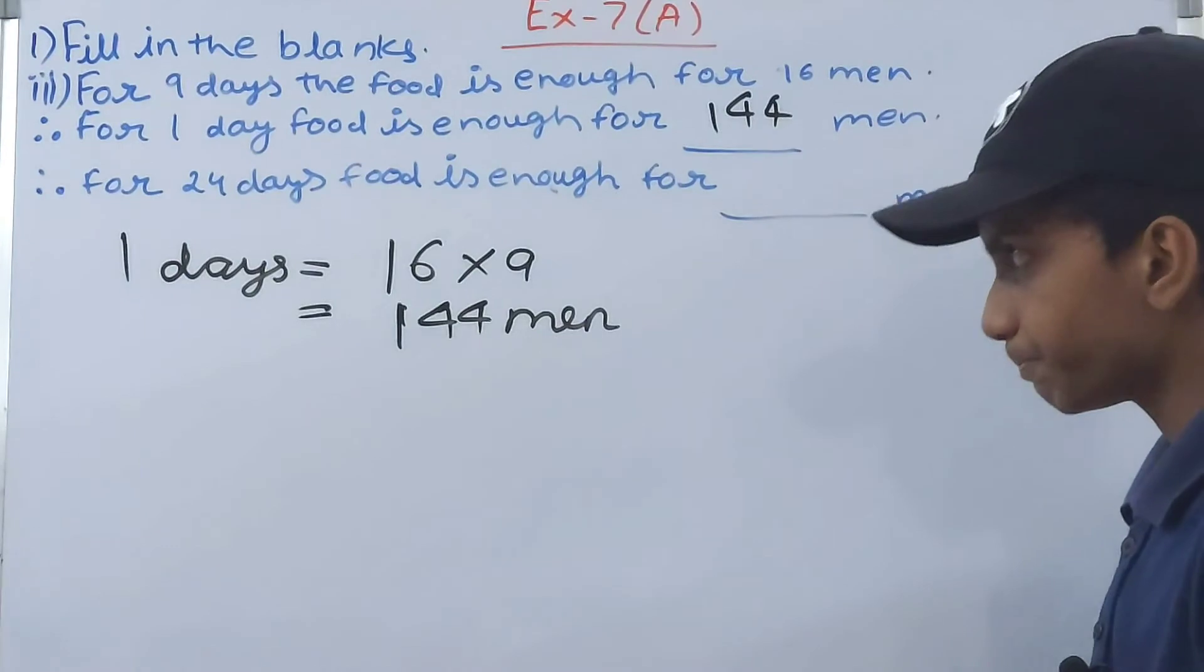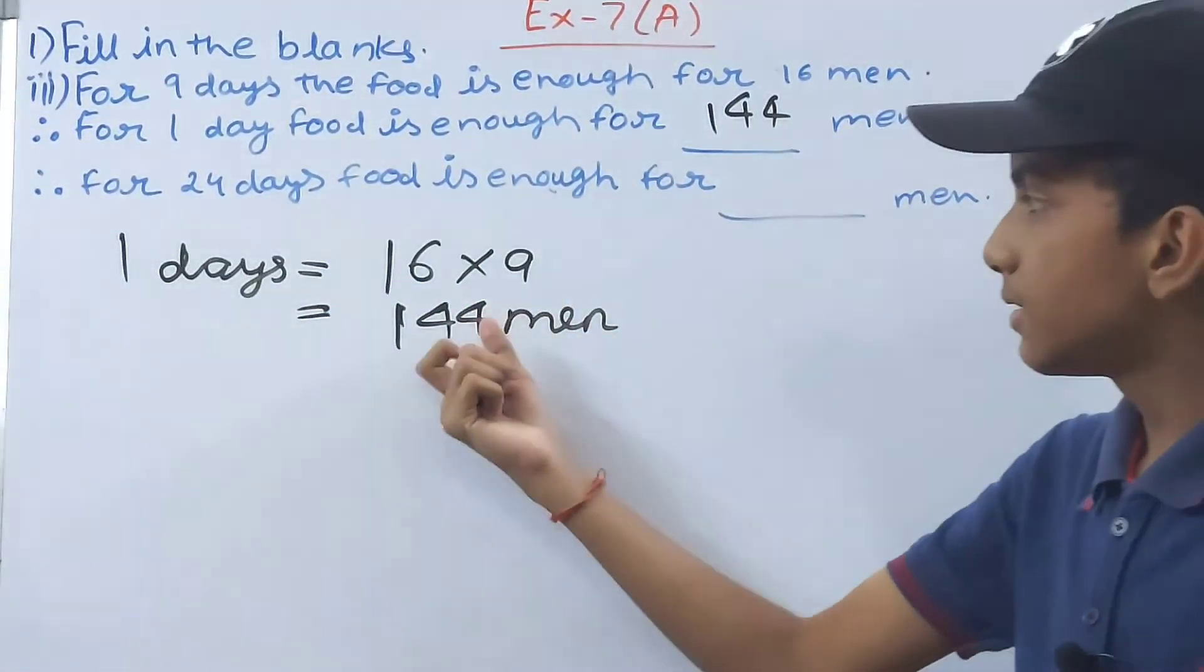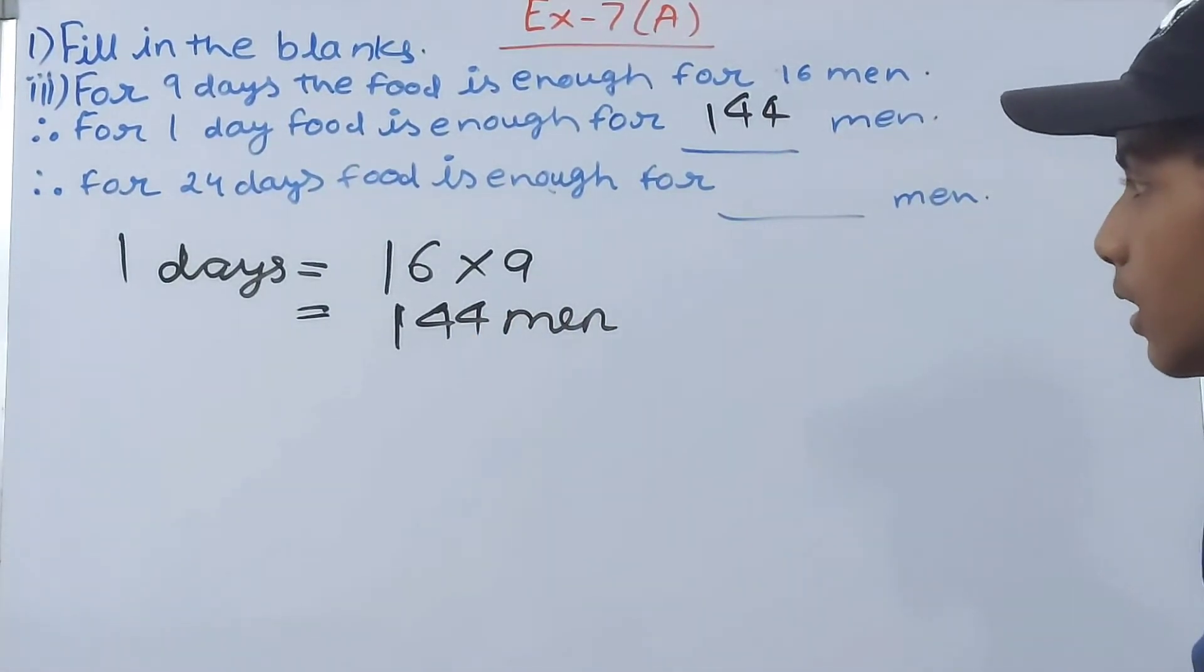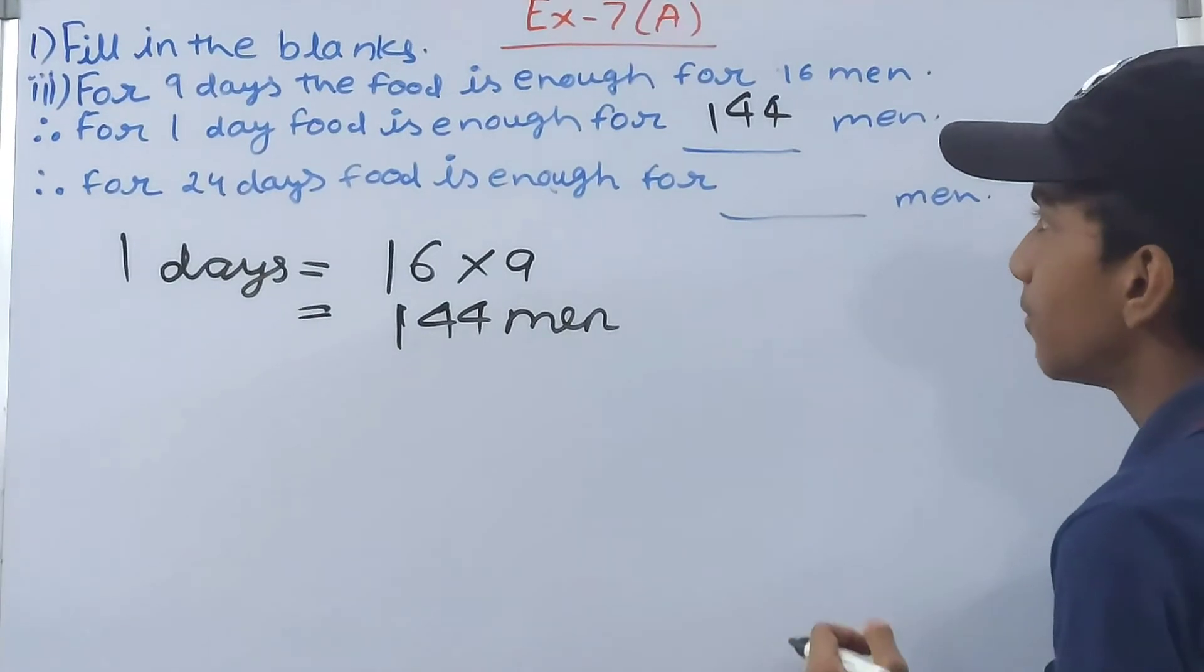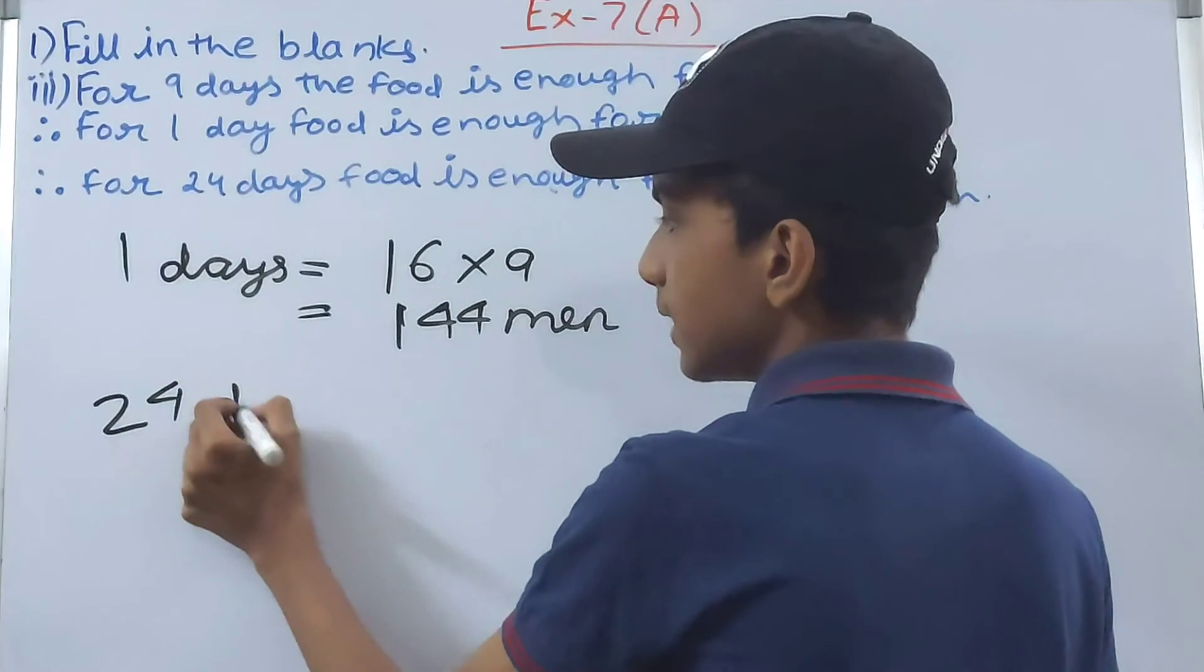Simply divide this 144 by 24 to get your answer. So you write here: 24 days is equal to 144 upon 24.